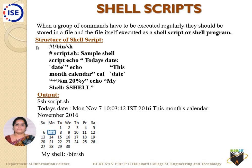Let us now look at a simple example of a shell script. As I said, for any shell script you will have an extension called .sh. To write a shell script, you can use the VI editor or gedit — you are already familiar with these from your C programs on Ubuntu. Now, the structure of a shell script: it always starts with the very first line called hash exclamatory sign slash bin slash sh.